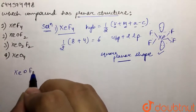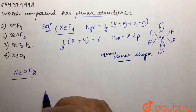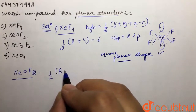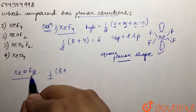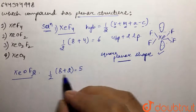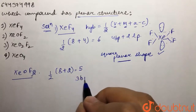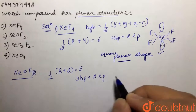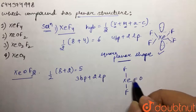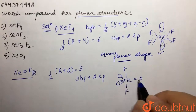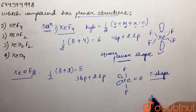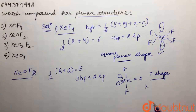Then if we see XeOF2, the central atom is again xenon. It has eight valence electrons plus two monovalent fluorine atoms, giving a steric number of (8+2)/2 = 5. It is making three bond pairs plus two lone pairs. Its structure has two fluorines, a double-bond oxygen, and two lone pairs attached — this is a T-shaped structure. Since it is not planar, this is not our answer.